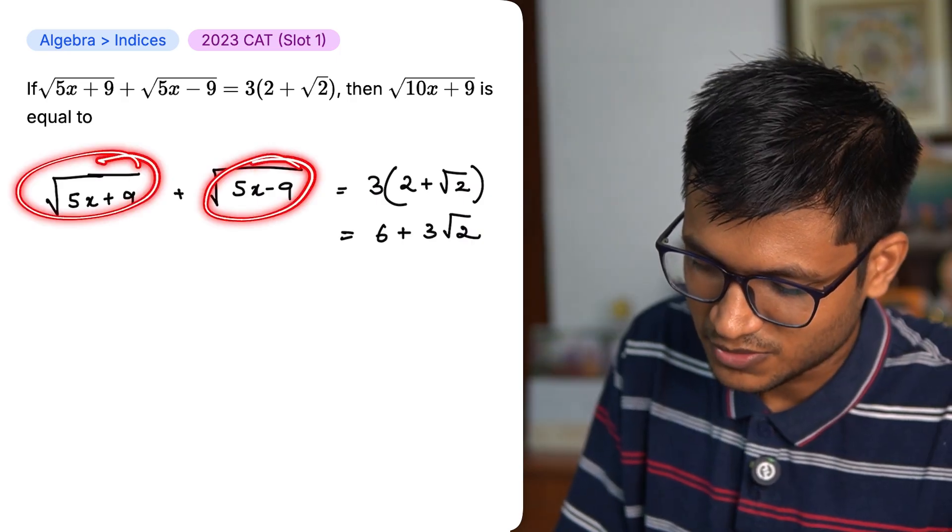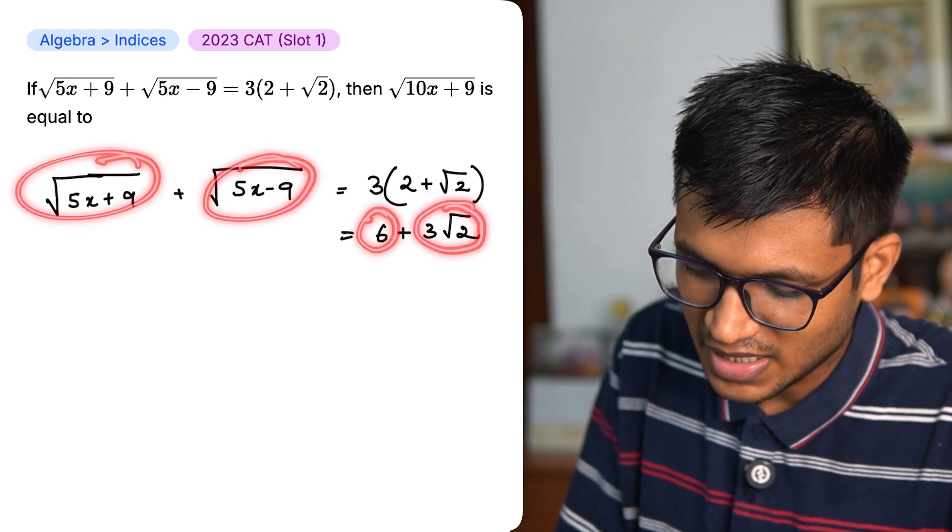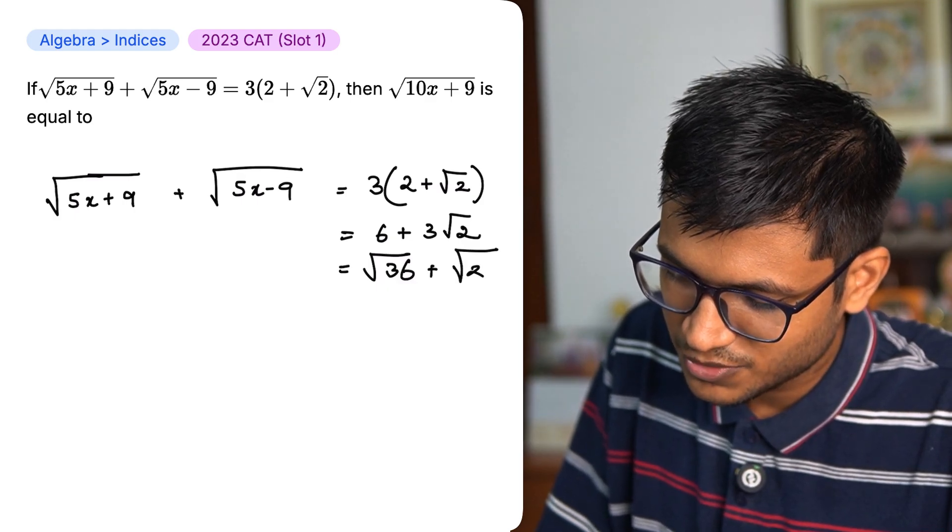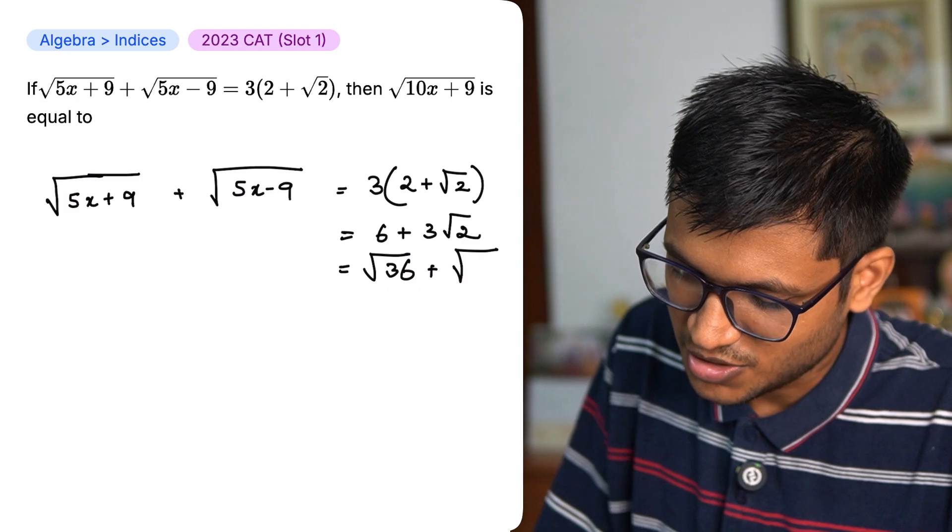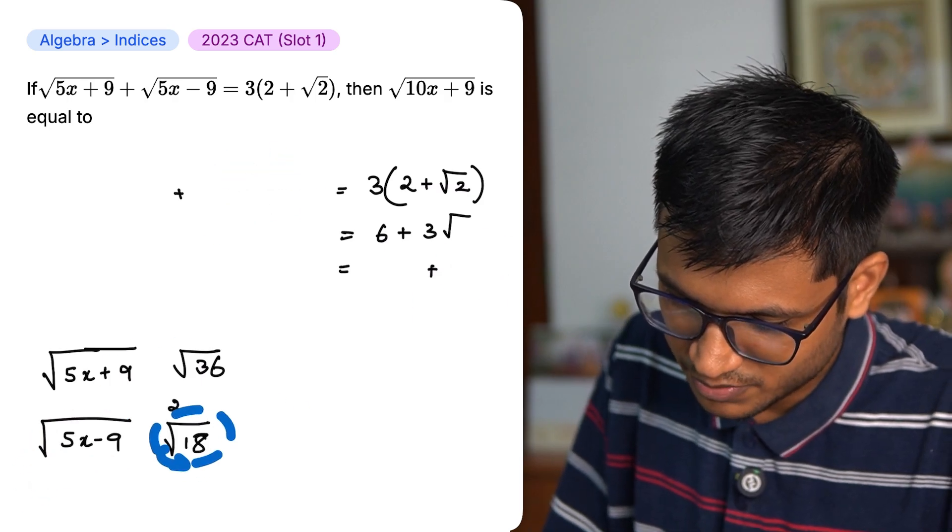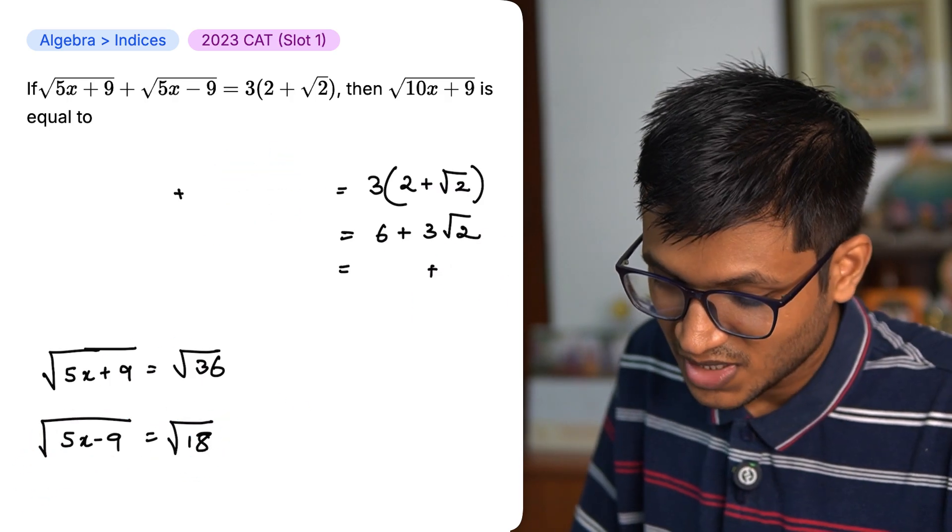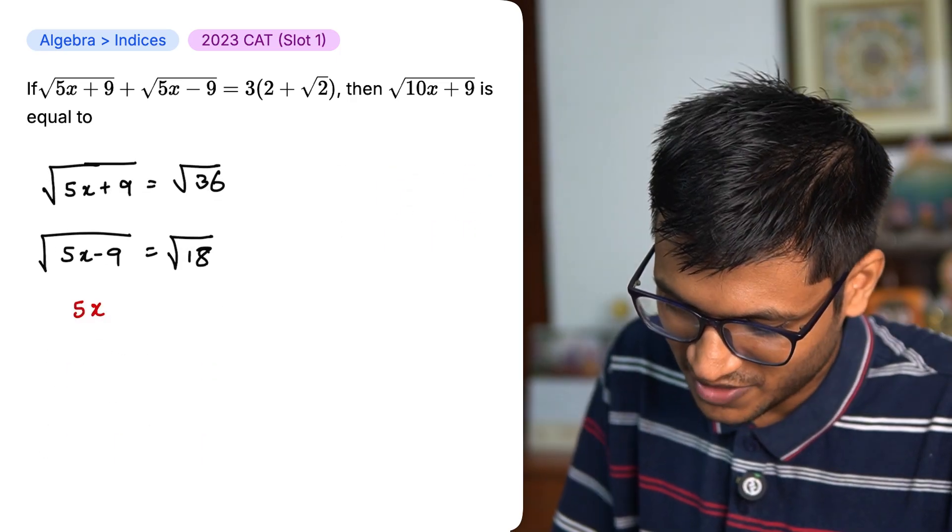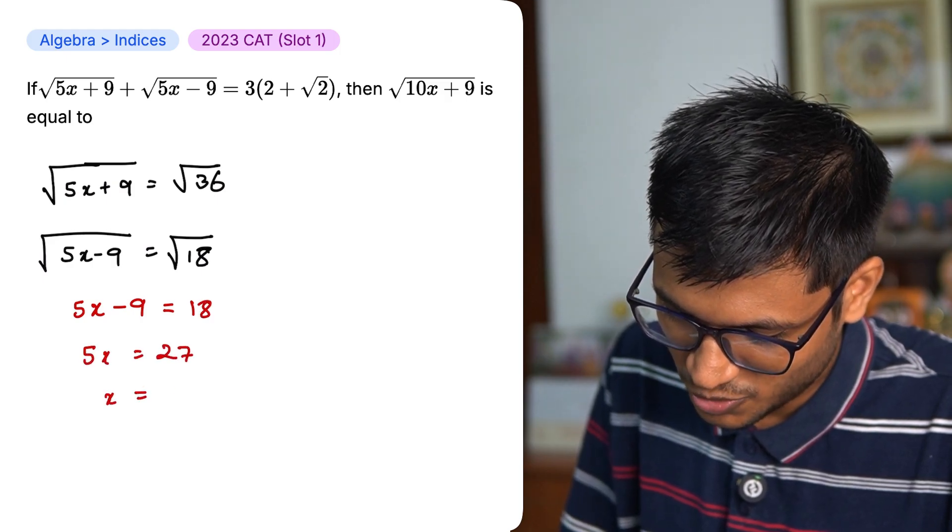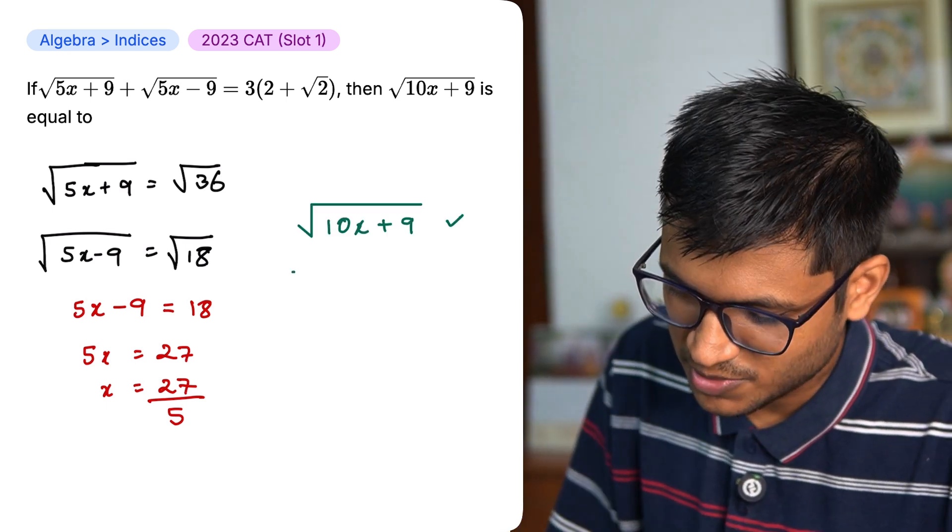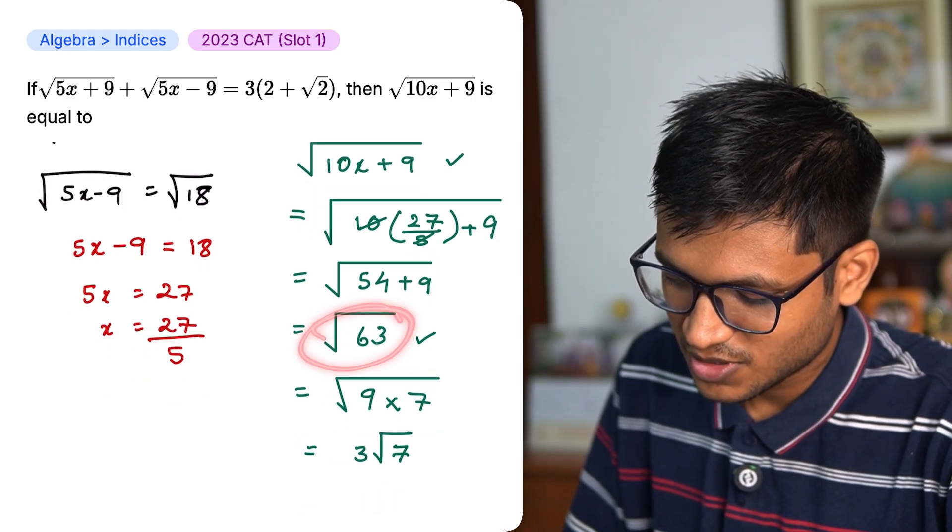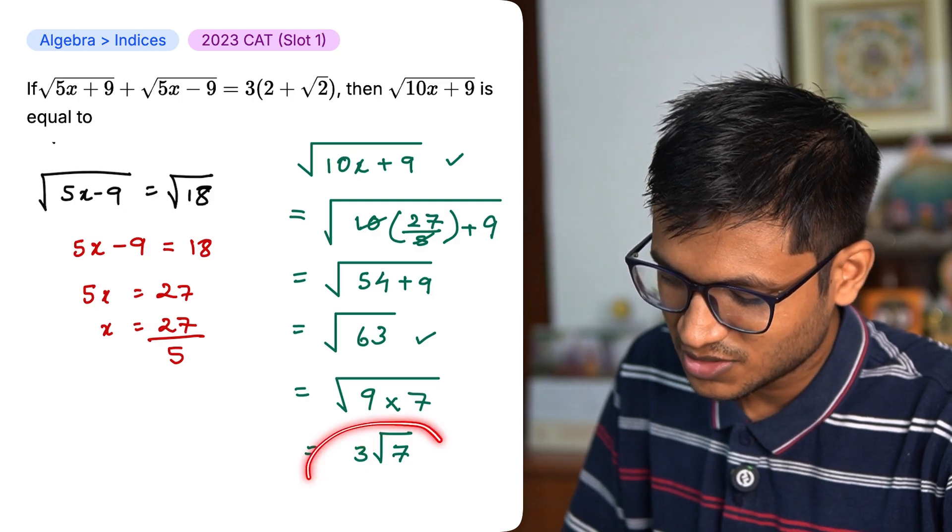I have a root being added to another root. Can I make this into a root and add it to another root? I can. 6 is root of 36. And this can be said to be root of 2 into 9 which is nothing but 18. Now can I say that this thing is equal to this thing and this thing is equal to this thing? If yes, let me try to derive the value of x. So 5x minus 9 equals to 18. 5x equals to 27 and x equals to 27 by 5. We need to find the value of this. Just plug the value of x. We can cancel this out and we get root of 63. Root of 63 can be written as root of 9 into 7. Root of 9 is 3. So your final answer is 3 into root of 7.